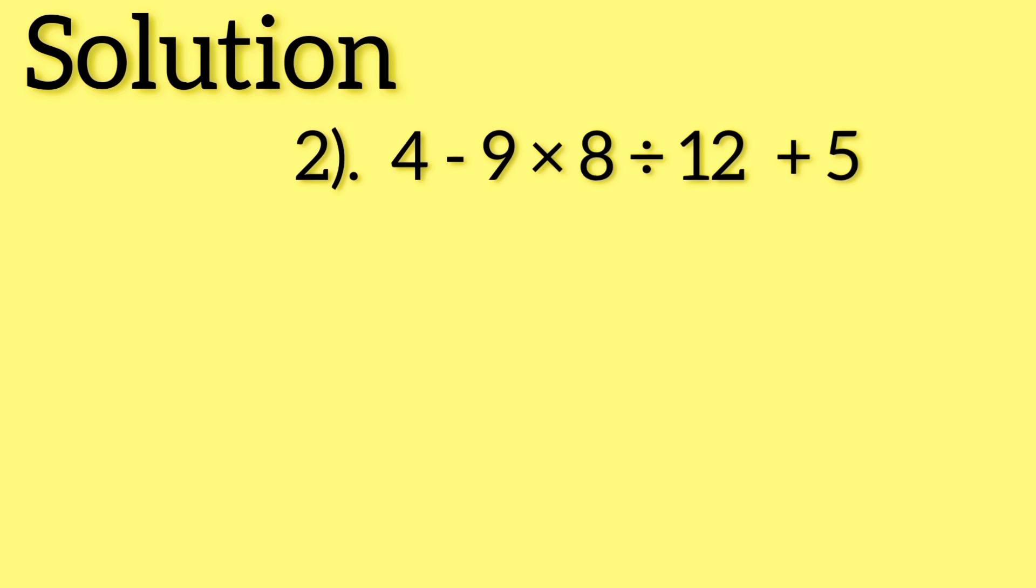Number two. So multiplication is first, you have to multiply first and then you divide. It's the same for subtraction and addition. The subtraction sign is first in this case, so you have to subtract first. Remember, negative six from four gives you negative two.